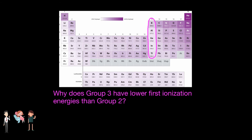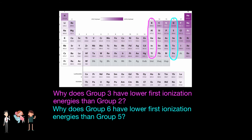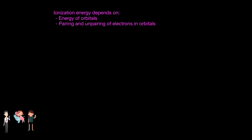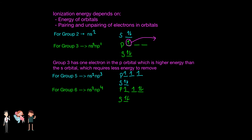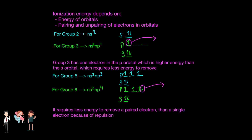Now wait — why does group 3 have lower first ionization energies than group 2? And why does group 6 have lower first ionization energies than group 5? We just said that first ionization energies increase going from left to right, so why is there this dip? As mentioned earlier, ionization energy also depends on the pairing and unpairing of electrons in orbitals. Group 3 has one electron in the p orbital, which is higher energy than the s orbital. Therefore, it requires less energy to remove the first electron in a p orbital than to remove an electron from a filled s orbital in the case of group 2. For group 6, the general configuration is ns²np⁴. After all the 3p orbitals have been filled by single electrons — following Hund's rule — the fourth p must be paired up. The electron repulsion makes it easier to remove the outermost paired electron, and therefore it requires less energy to remove the paired electron than a single electron.